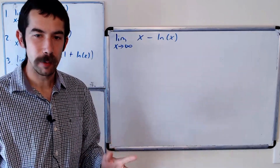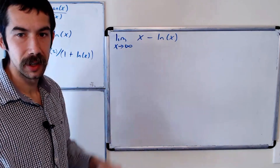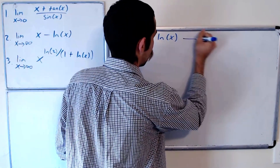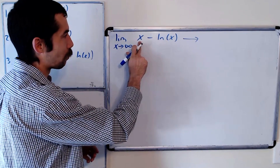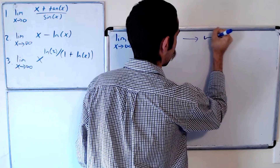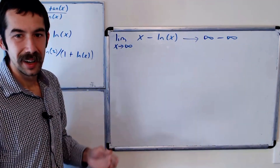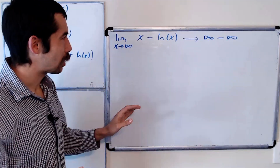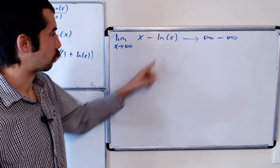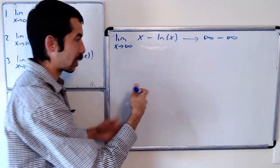Now we're going to evaluate the limit as x goes to infinity of x minus natural log of x. The first thing we should do is plug in infinity. We get infinity minus natural log of infinity — so infinity minus infinity. We're in another indeterminate form, but we can't use L'Hopital's rule yet, because you need a fraction. So we somehow have to combine x minus natural log of x as a fraction.